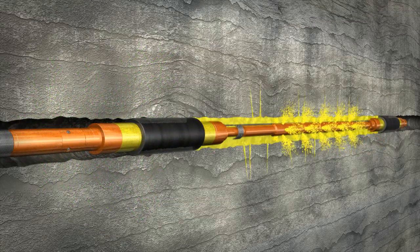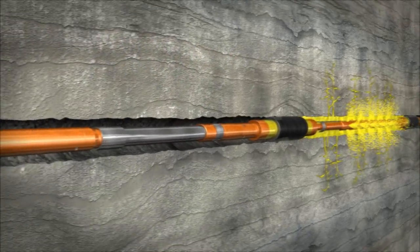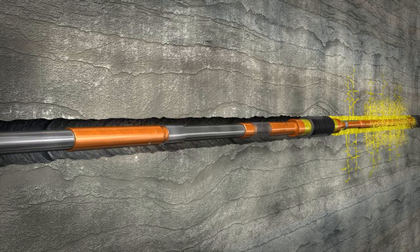When the POSIFRAC straddle is used for acidizing applications, a unique benefit includes the ability to retain acid in the string through the use of the TAM fluid control valve while moving between intervals in the wellbore.